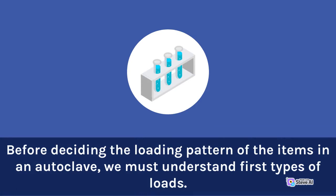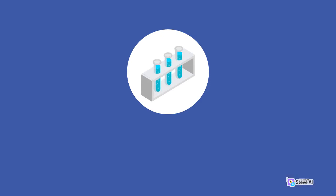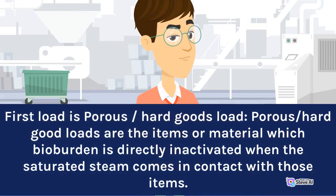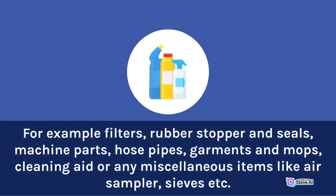Before deciding the loading pattern of the items in an autoclave, we must first understand types of loads. The first load is porous/hard goods load. Porous/hard goods loads are items or materials whose bio-burden is directly inactivated when the saturated steam comes in contact with those items. For example: filters, rubber stoppers and seals, machine parts, hose pipes, garments and mops, cleaning aids, or any miscellaneous items like air samplers, sieves, etc.